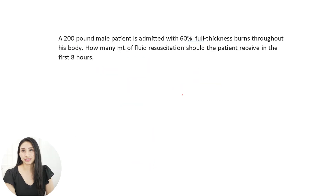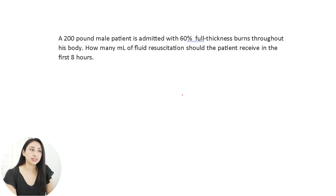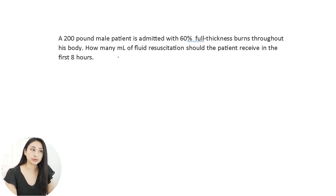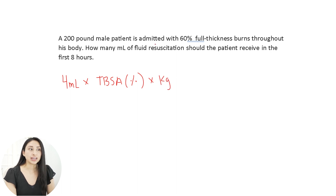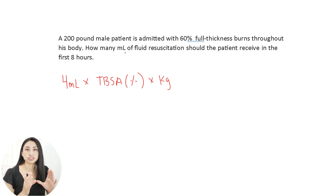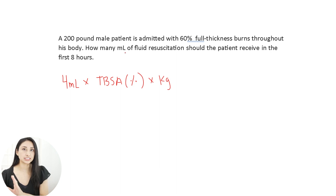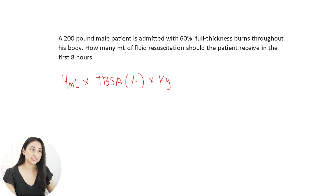The next problem is figuring out the amount of fluid to give a burn patient based on the Parkland formula. A 200-pound patient is admitted with 60% full-thickness burns. How many milliliters of fluid resuscitation should the patient receive in the first eight hours? The Parkland formula is: 4 milliliters times the percentage of burns times the patient's weight in kilograms. Remember: half of the total fluid is given in the first eight hours, and the other half in the next 16 hours.